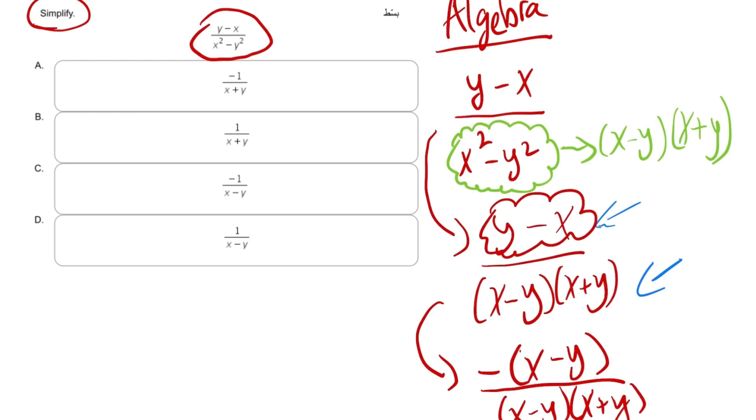Now what you would notice here is the top part is the same as the bottom part. So we can cross them out in this case. So we're going to say x minus y from the top gets cancelled with x minus y from the bottom.